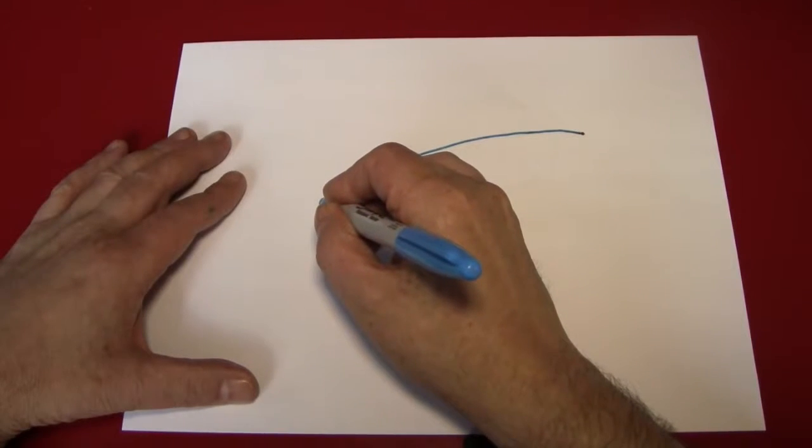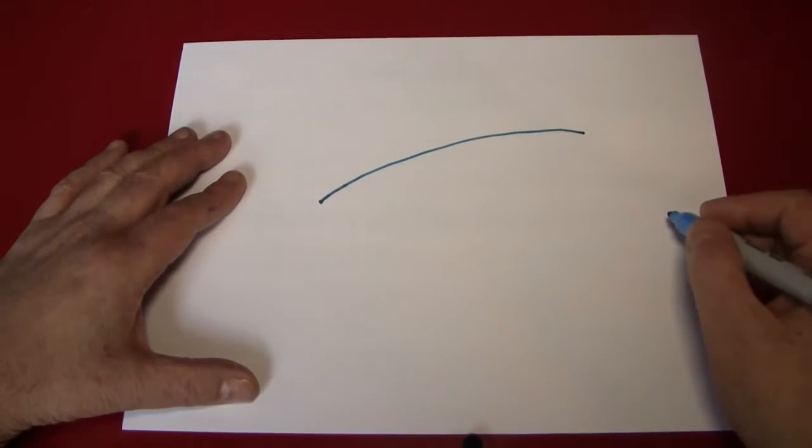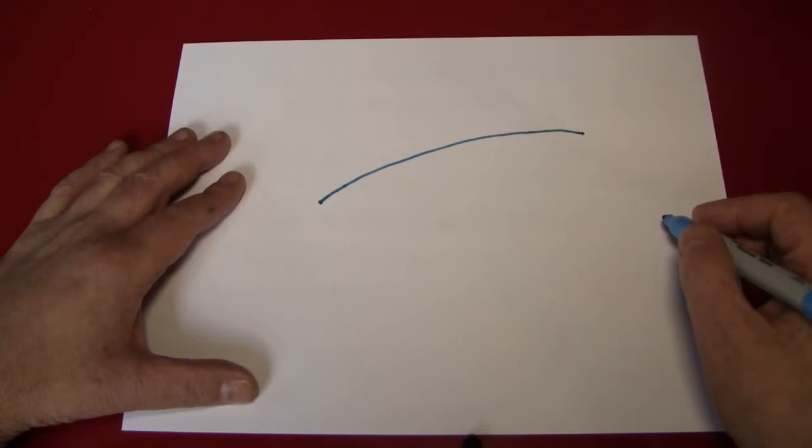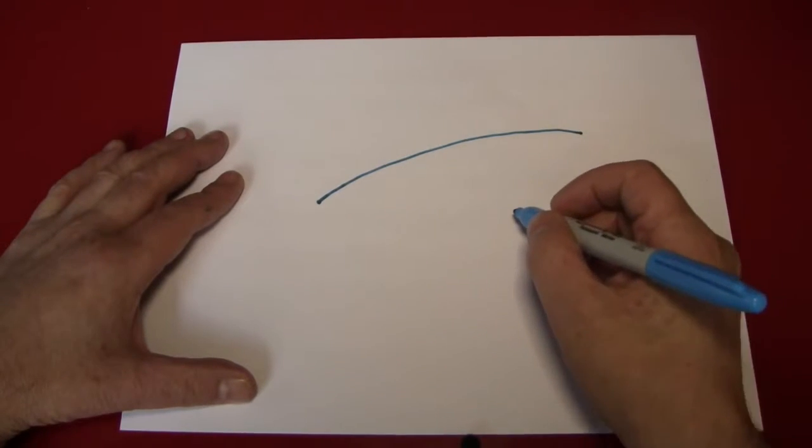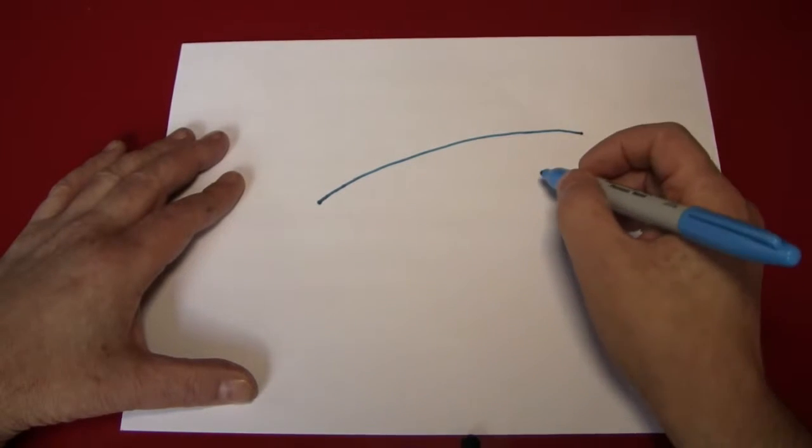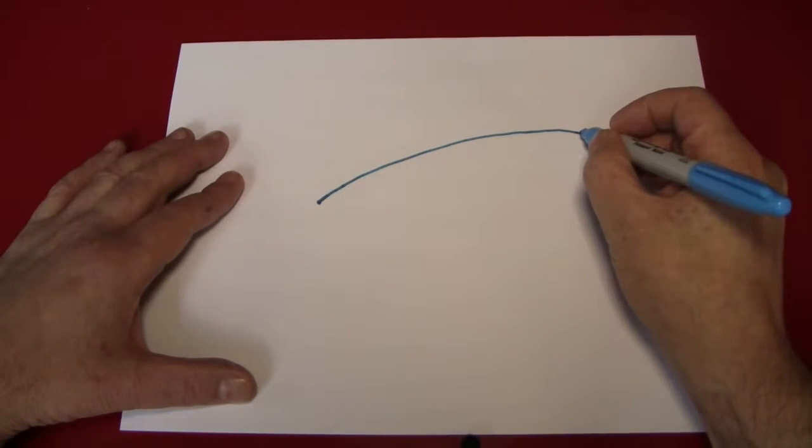Draw a curve line most of the way across the page. Next, what we're going to want to do is create a mirror or complementary line to complete the cigar shape.